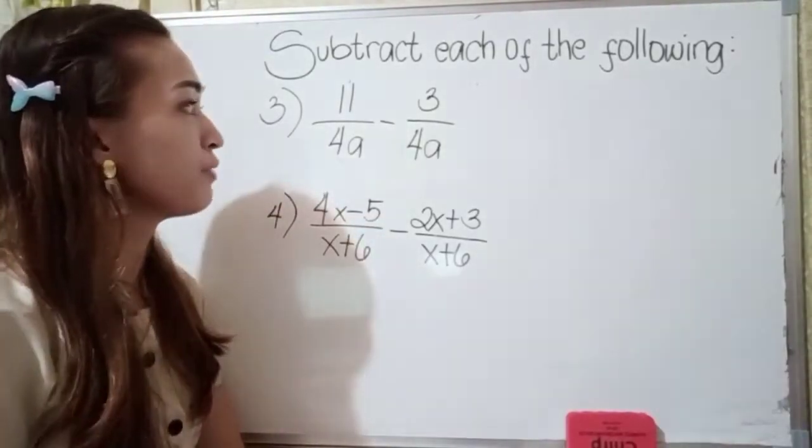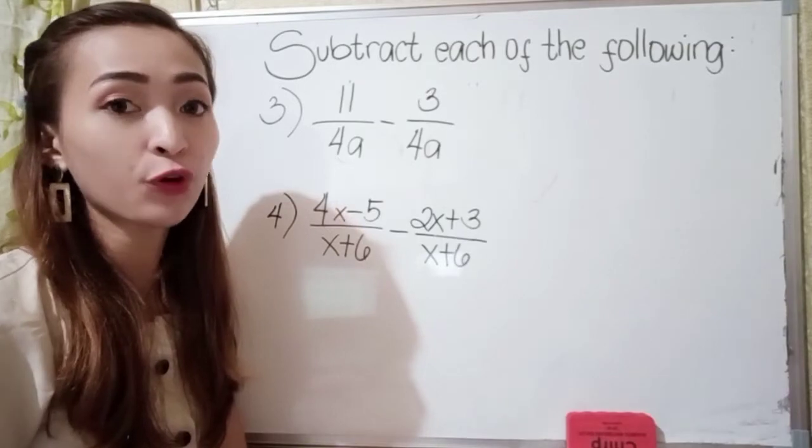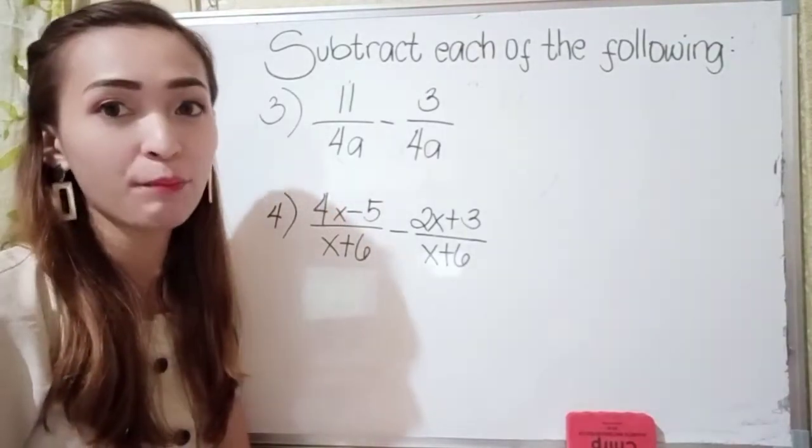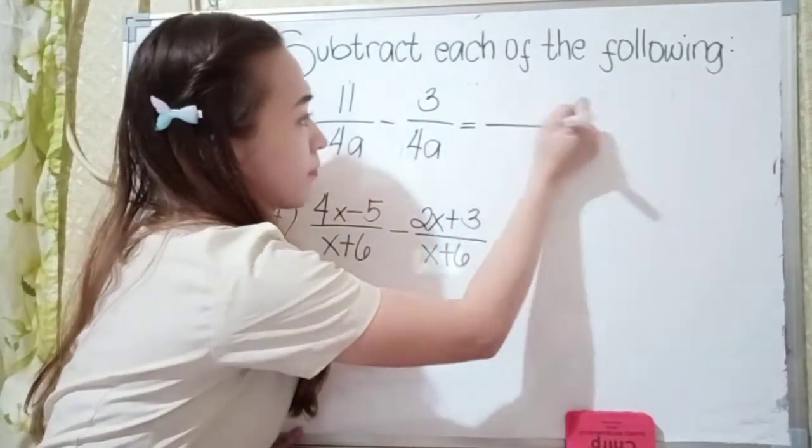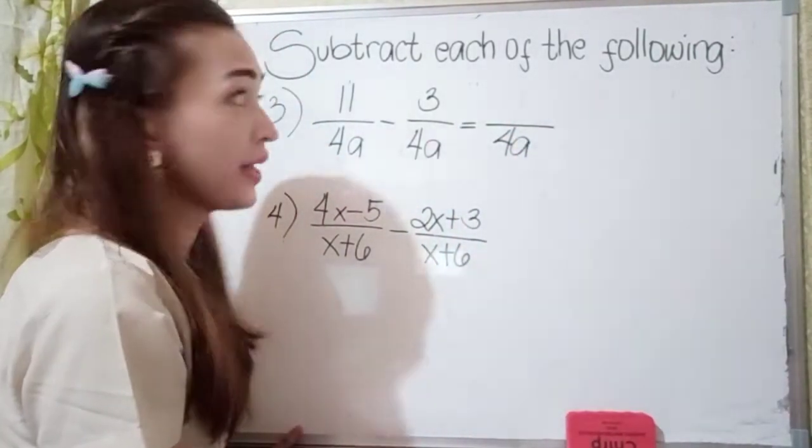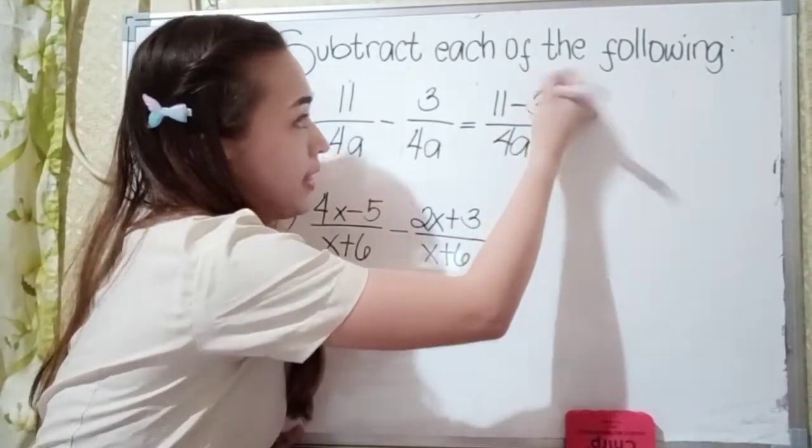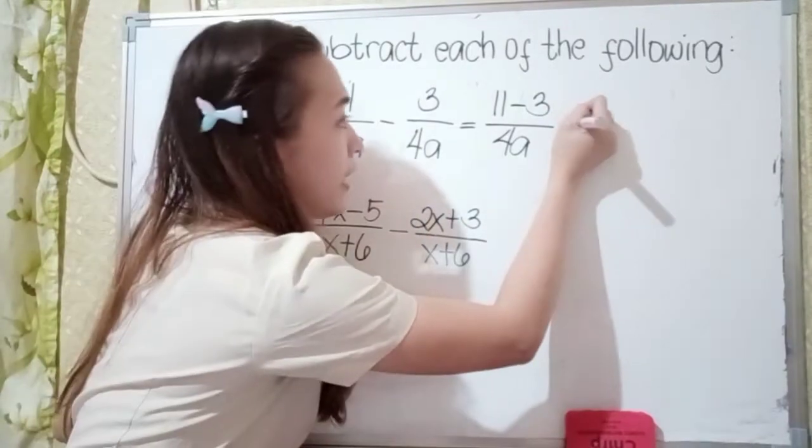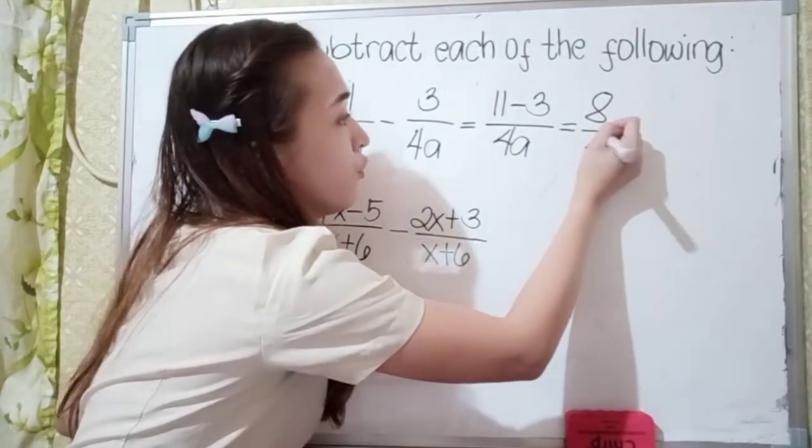Okay, next for number 3, we have 11 over 4a minus 3 over 4a. Again, they have the same denominator, so just write 4a. Next is to find the difference of 11 and 3. So 11 minus 3 is 8 over 4a.